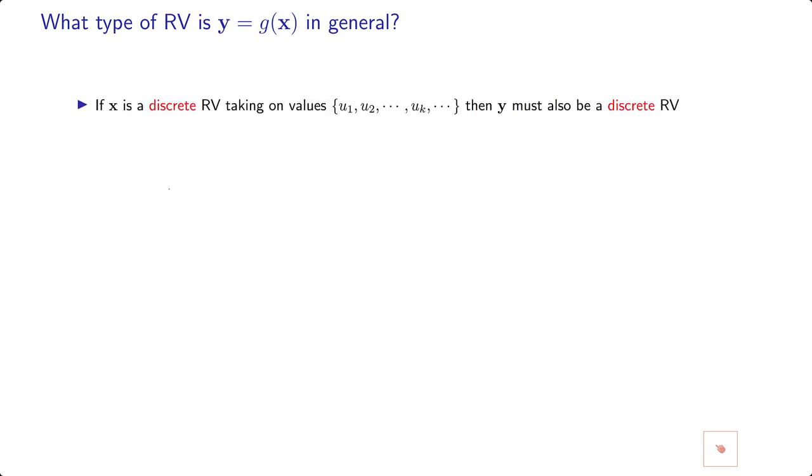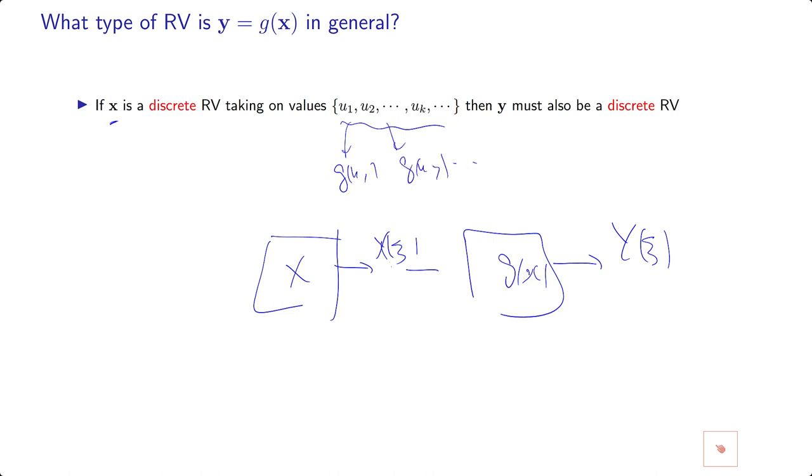If X is a discrete type random variable, so if X of ζ takes a countable number of values, it is obvious that if you give it to any other function, the outcome Y of ζ also would be discrete, because you ultimately map these to G of U1, these to G of U2, etc.